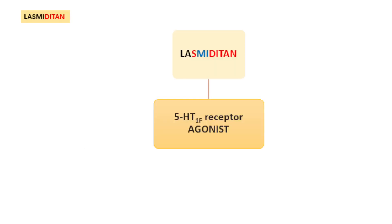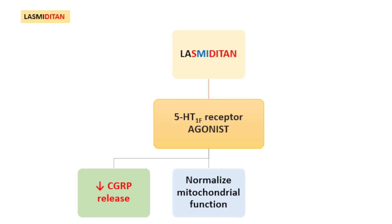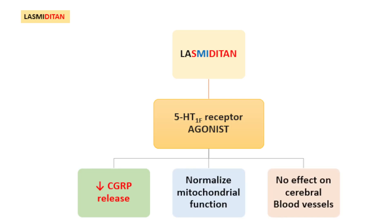Coming to the mechanism flowchart: lasmiditan is a 5HT1F receptor agonist. It decreases CGRP release, thereby decreasing nociceptive sensitization and thereby decreasing the headache in case of acute migraine. In addition, it normalizes mitochondrial activity, and it has no effect on the cerebral blood vessels.